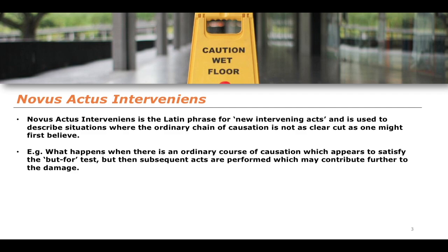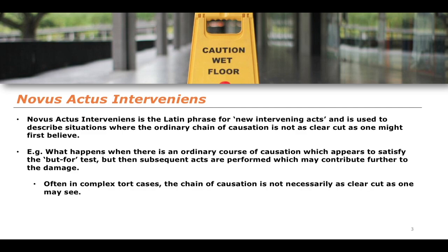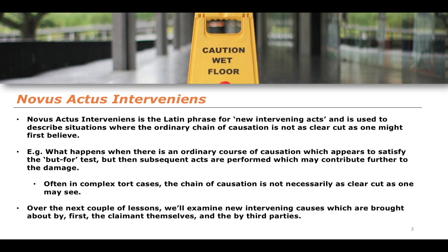In complex tort cases, the chain of causation isn't often simply one defendant doing a negligent thing that directly harms a claimant. In many cases there are all sorts of different intervening causes — maybe three or four different things, some negligent, some not — all contributing to the damage caused. We'll examine over the next few lessons how new intervening causes are brought about, first by claimants themselves, and then by third parties.